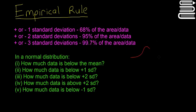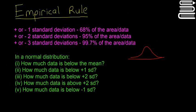Just a quick picture of a bell curve — in a normal distribution: how much data is below the mean (question 1), how much data is below plus 1 standard deviation, how much data is below plus 2 standard deviations, how much data is above plus 2 standard deviations, and how much data is below minus 1 standard deviation. There are a few little tricks to help you answer these questions, and we'll go through them one by one.